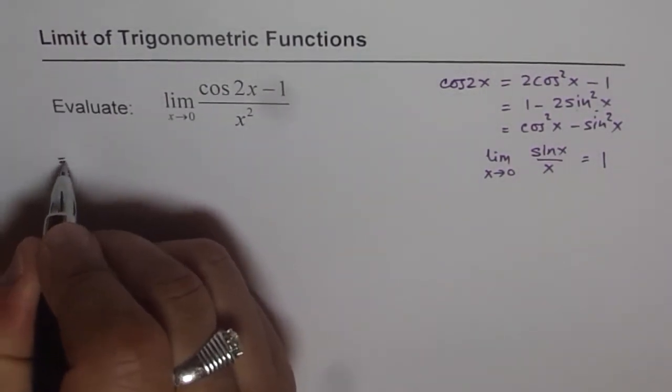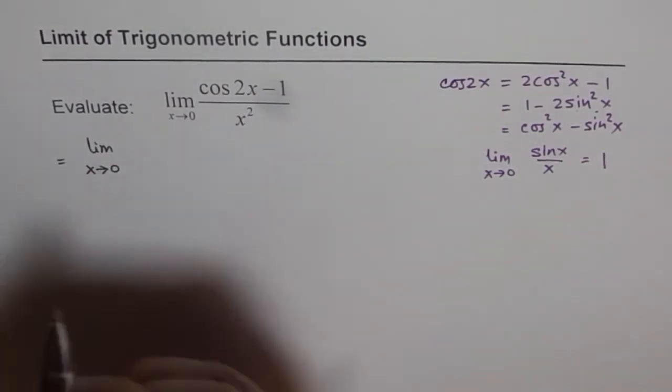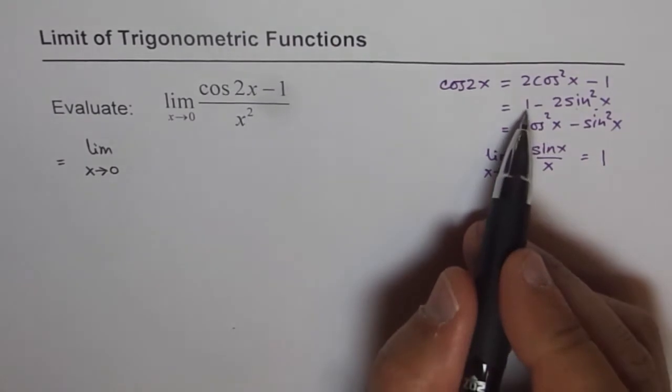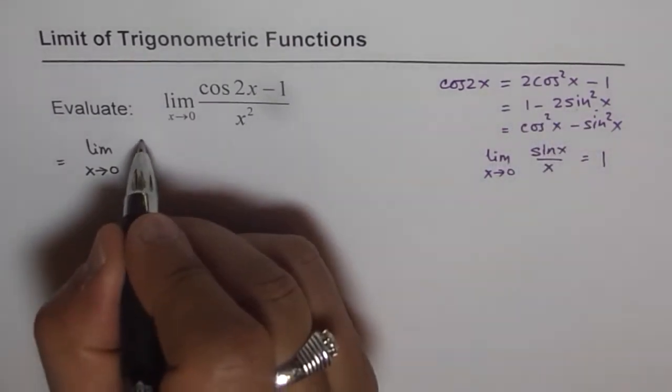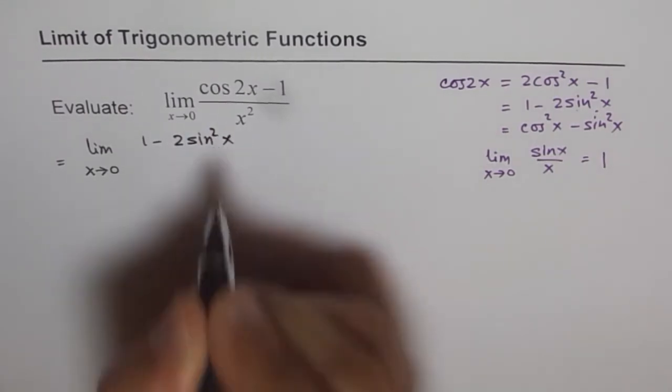So let us do that. We can write this limit as limit x approaching 0. Cos 2x we are writing as 1 minus 2 sin squared x. We get 1 minus 2 sin squared x.